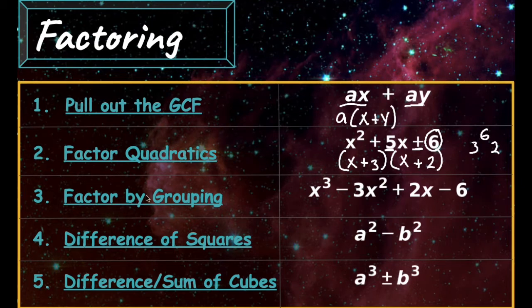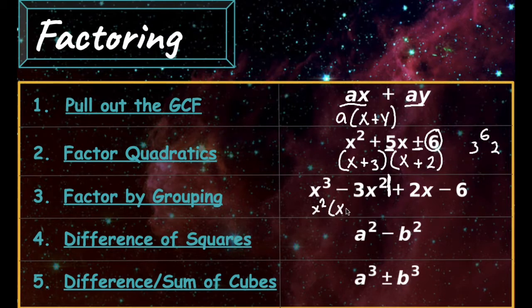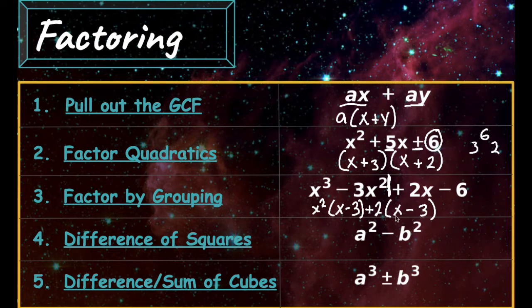The third way to factor is to factor by grouping. When we factor by grouping, we need to separate the polynomial in half. In the first half, you need to think about what those two terms have in common and pull out the greatest common factor. The first two terms have an x squared in common and leftover will be x minus 3. The second two terms have a 2 in common, so we're going to write plus 2, and if we factor out a 2 from the second two terms, we're going to get x minus 3. Notice we have x minus 3 and x minus 3 — we can pull that x minus 3 out and then we'll be left with x squared plus 2.